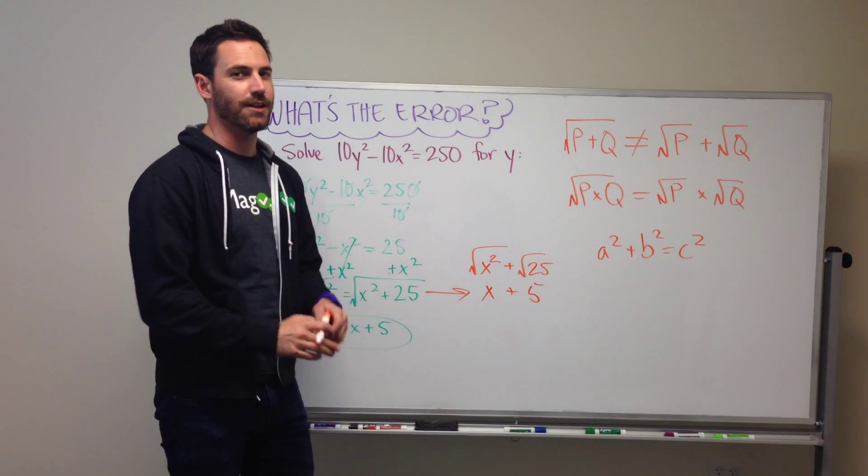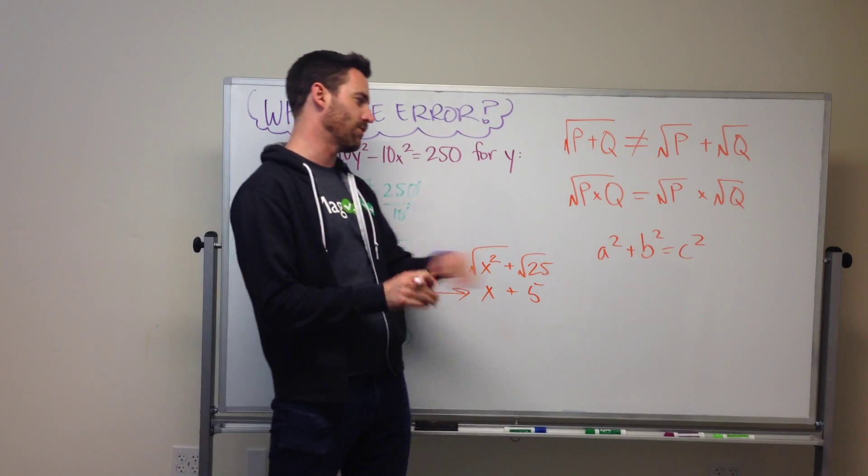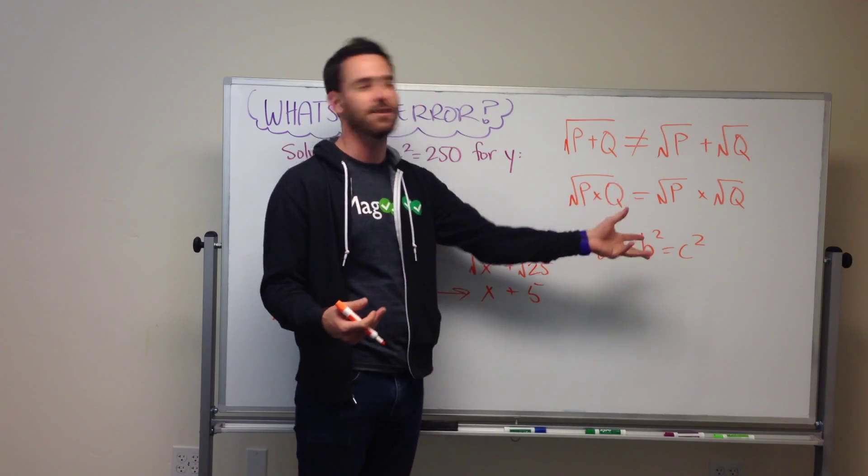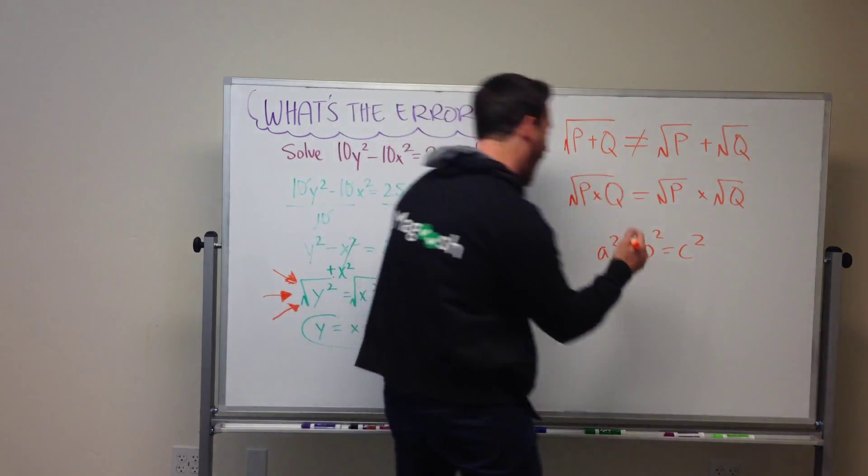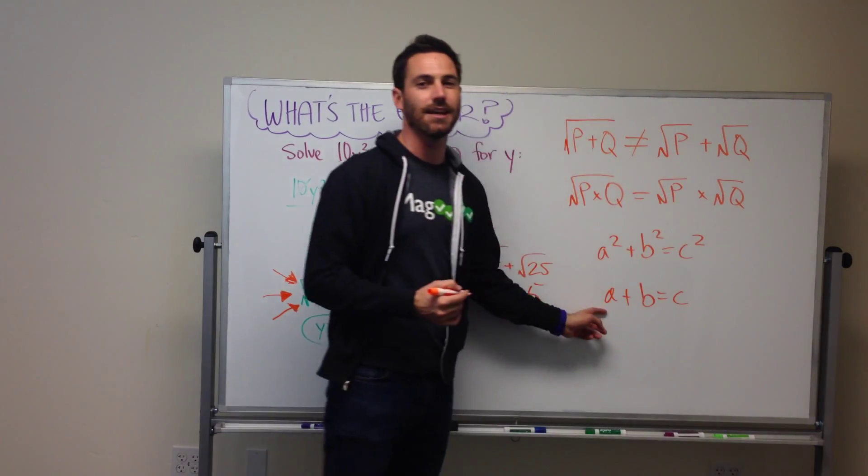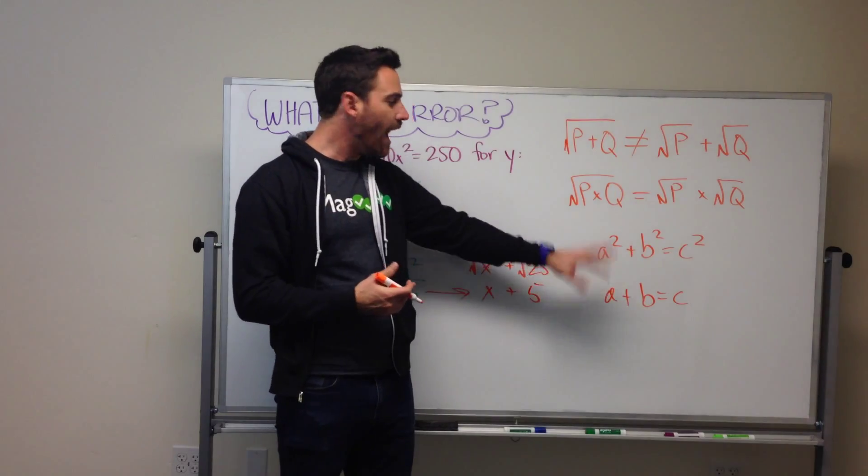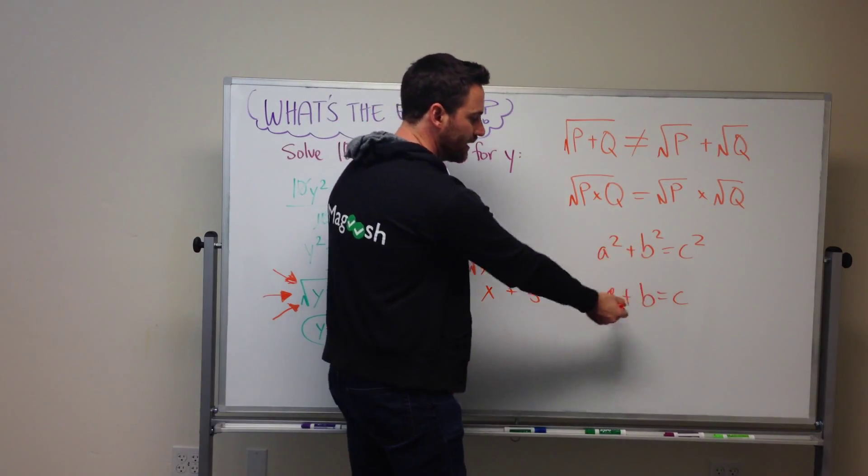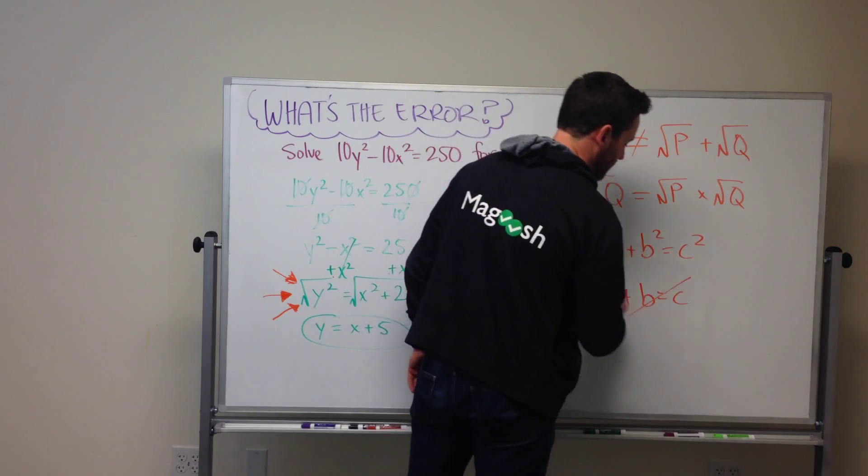Now, Mr. Pythagoras was not a cruel and evil person who wanted to make things more difficult for us. It wasn't like he decided to make it a² + b² = c² and it could actually be a + b = c. They're not the same thing. You can't take the square root of this side to get a + b. That's just not how it works.